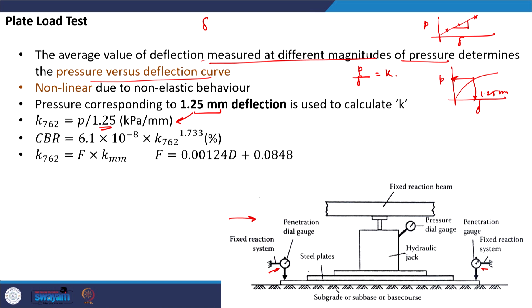The plate load test is a very cumbersome test to conduct in the field. The machine is huge and it is not always feasible to carry it to the field. Researchers have therefore developed correlations for K with respect to easier tests. CBR is one of those easier tests that can be conducted in the laboratory — if you know the CBR of the soil you can estimate the value of K762.